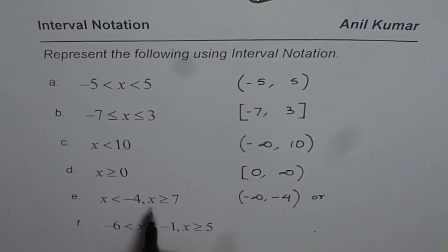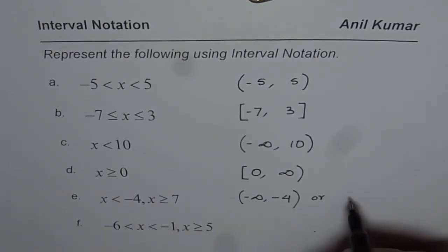I'll use union in this case. And then we have x is greater than or equal to 7, which means 7 is included, and it will go to infinity.